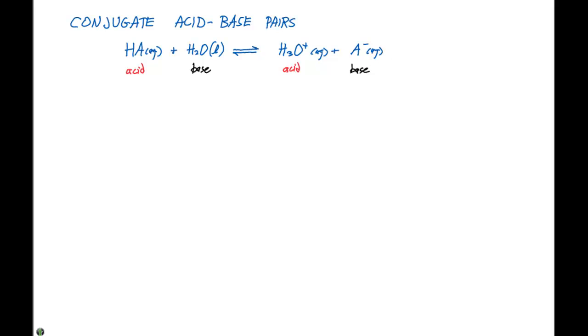This leads to something called conjugate pairs, where we have an acid, HA, and its conjugate base is going to be A-. In addition, our base is going to be water, and the conjugate acid is going to be H3O+. We call these conjugate pairs.